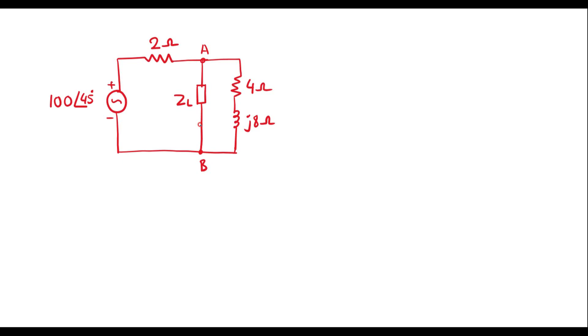This is the given circuit. So we know that while calculating the maximum power, first we have to bring this network to Thevenin's equivalent circuit. Thevenin's equivalent circuit means we need to calculate Thevenin's voltage Vth and we have to calculate Thevenin's resistance Rth.